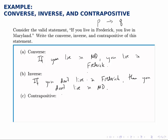The contrapositive, the last variation, is the one that's equivalent to the original conditional, where you reverse the arrow and negate both pieces. So that would be: not Q implies not P. Therefore you'd write: if you don't live in Maryland, then you don't live in Frederick.